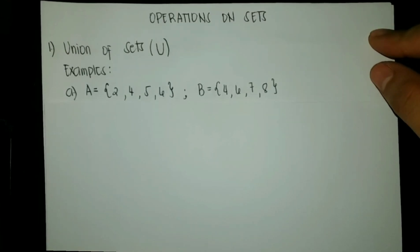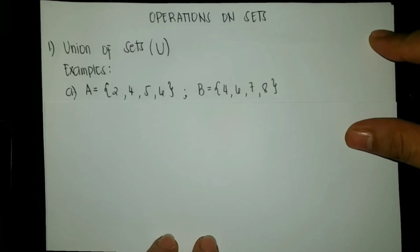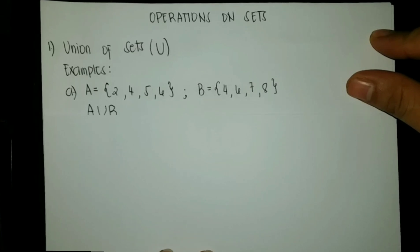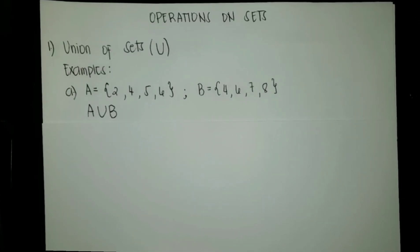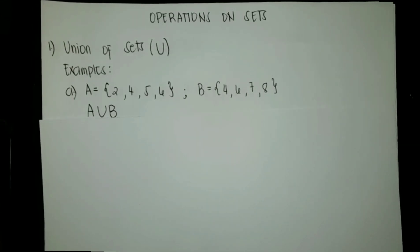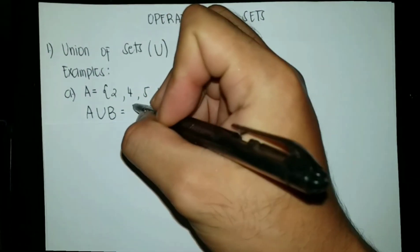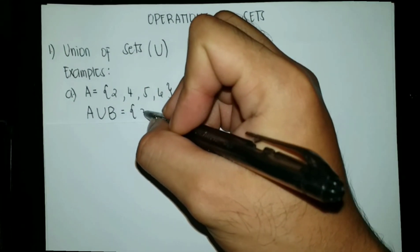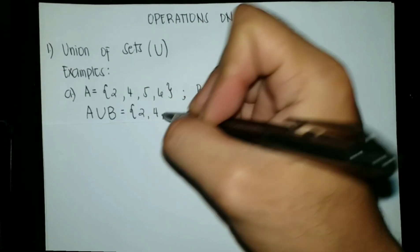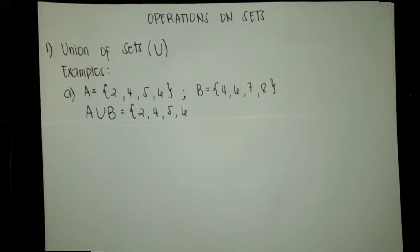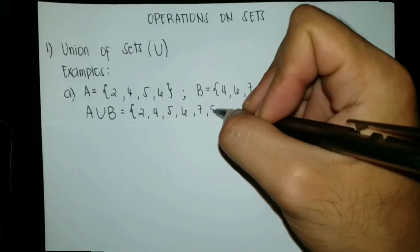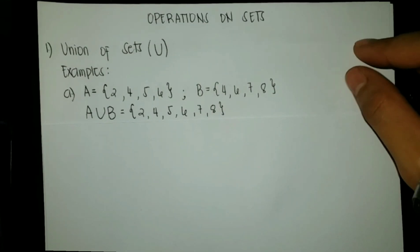For example, we have sets A and B. Set A with the elements 2, 4, 5, and 6, and set B with the elements 4, 6, 7, and 8. Let us get A union B. We are going to combine the elements of the given sets such that no element will be repeated. So A union B is equal to the set with the elements 2, 4, 5, 6, 7, and 8. That is A union B.